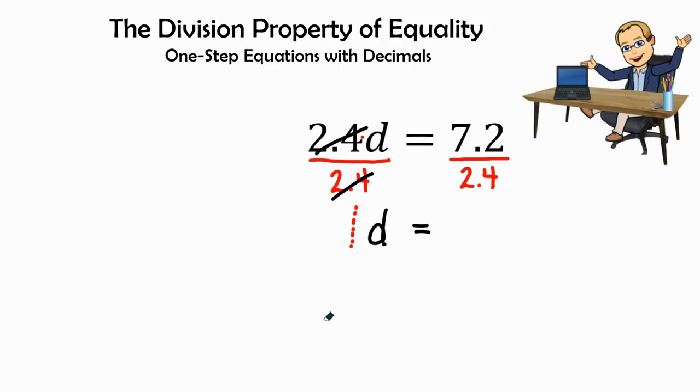We can just remember that it is 1d, but we don't really show it when it comes to our equations. And then we ask ourselves 7.2 divided by 2.4.